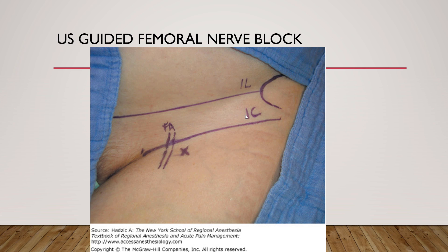The femoral nerve block is one of the more common blocks for the lower extremity. Depending on where you perform it, it can be called an adductor canal block if done distally. The biggest surface landmark is the inguinal ligament, running from the anterior superior iliac spine to the pubic tubercle. In this region you have the femoral artery, femoral nerve, femoral vein, and lymphatics. The ultrasound probe is placed parallel to the inguinal ligament.